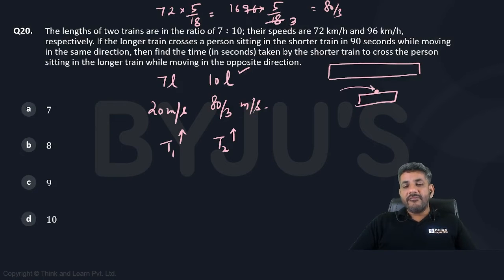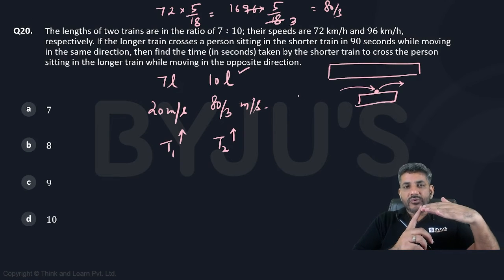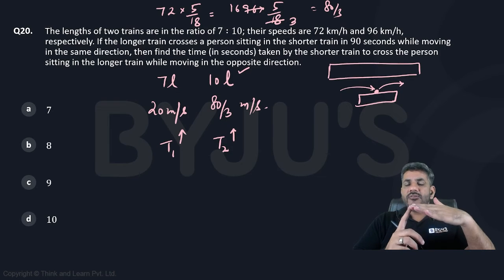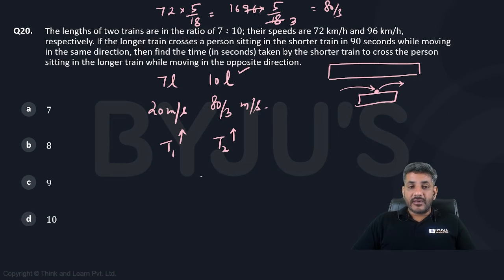You start counting the time when the longer train reaches here. You stop counting the time when the longer train crosses this person. So ultimately the longer train has to cover its own length with respect to the person. It has got nothing to do with the length of the shorter train. So the longer train has to cover its own length that is 10L. At what speed?